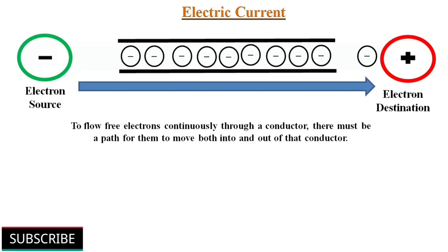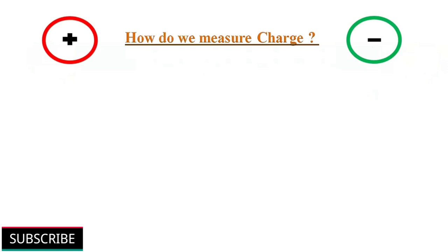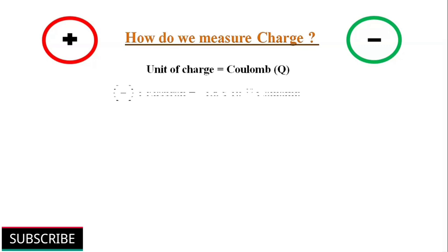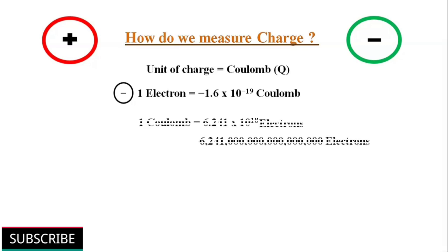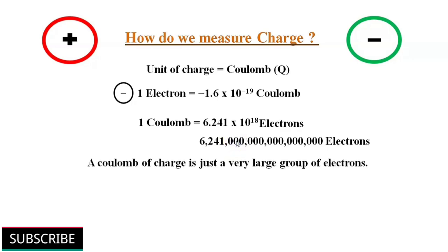Now we know that electric current is the continuous flow of electric charge. But how do we measure this charge in order to know how much current is flowing through a conductor? Charge is measured in Coulombs, denoted by symbol Q. The electric charge of an electron is a negative charge — that is, minus 1.6 multiplied by 10 to the power of minus 19 Coulombs. So 1 Coulomb of charge is equal to 6.241 multiplied by 10 to the power of 18 electrons. From this figure, we can imagine that a Coulomb of charge contains a very large group of electrons.